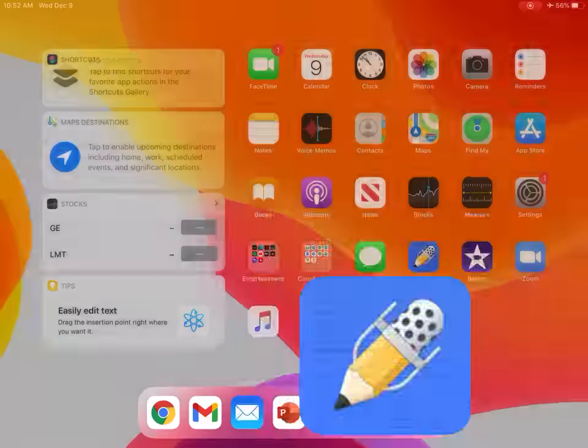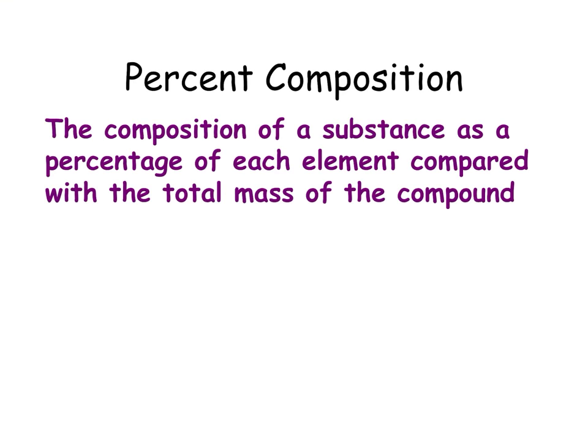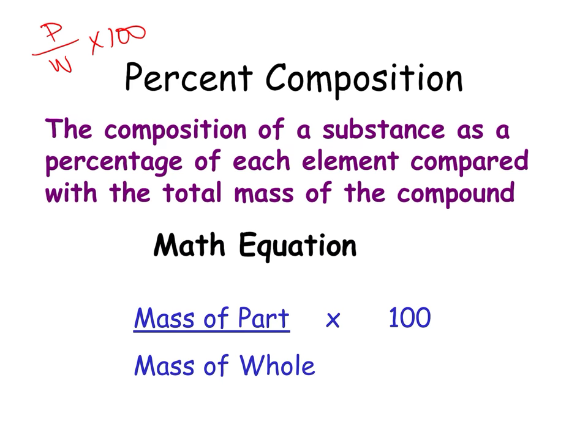So, back to the notes. Percent composition is the composition of a substance as a percentage of each element compared to the total. Remember how we just said it's mass of part over mass of whole times 100? So there you go. Oh, look. There it is. So your mass of part over mass of whole.